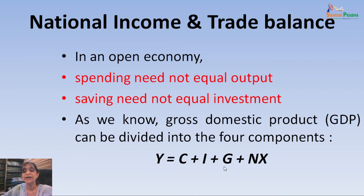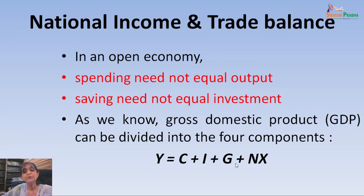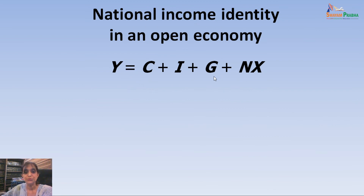Similarly, I, which is investment in the economy, will also be composed of domestic investment spending and investment from foreign goods. Government spending is also divided between both sectors. NX — net exports — is basically equal to exports of the country minus imports of the country. In order to understand how in an open economy this particular identity changes or what implication it has, just keep in mind this equation: Y = C + I + G + net exports, because we will be doing a lot of operations on it to derive very interesting results.